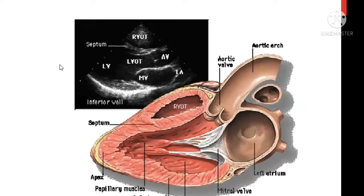Looking at the details: the right ventricular outflow tract, the septum, LV, LV outflow tract, aortic valve with the aortic root, mitral valve, and the left atrium — this is the normal anatomy of the parasternal long axis view. The apex is also visible at the far end.